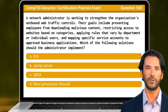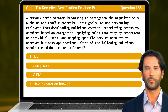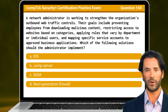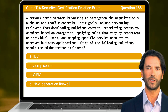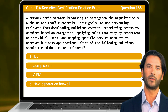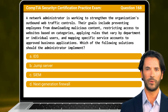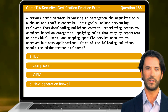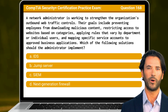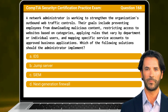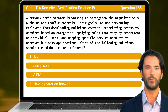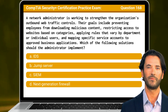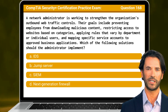Question 168. A network administrator is working to strengthen the organization's outbound web traffic controls. Their goals include preventing employees from downloading malicious content, restricting access to websites based on categories, applying rules that vary by department or individual users, and mapping specific service accounts to approved business applications. Which of the following solutions should the administrator implement?